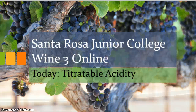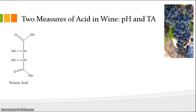Hi everybody. We're back today again with another edition of Wine 3 Online. Today we're talking about titratable acidity. Let's do a little review. Remember there were two measures of acid in wine: one was pH and one was TA. Why do we have to use both of those?